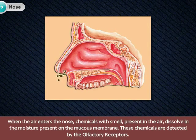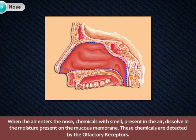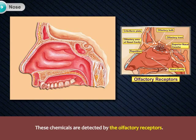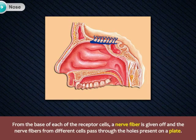When air enters the nose, chemicals with smell present in the air dissolve in the moisture present on the mucous membrane. These chemicals are detected by the olfactory receptors. From the base of each receptor cell, a nerve fibre is given off, and the nerve fibres from different cells pass through holes present on a plate.